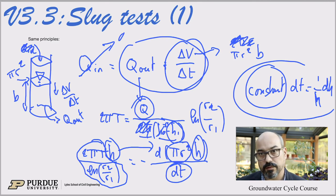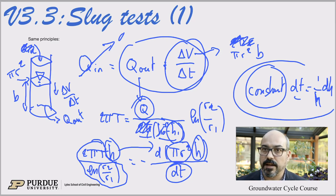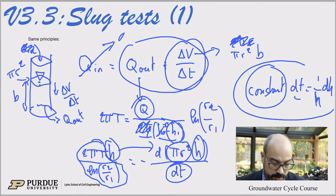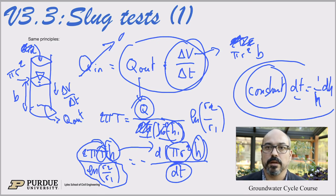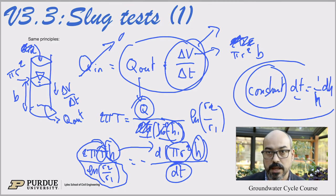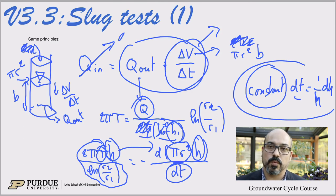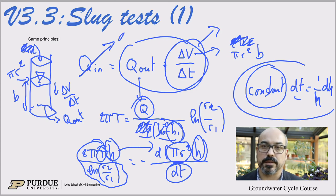Integrating both sides, the right-hand side gives a log of h and the left-hand side gives time. If we plot head versus time, all other constants — including the radius — are known, allowing us to calculate transmissivity as the only unknown. That's how, conceptually, we go from a mass balance to head-versus-time data to calculating transmissivity for the aquifer. In the next video, I will show you how to use the first method, which is the Cooper method. Thank you.